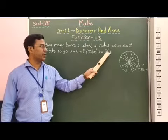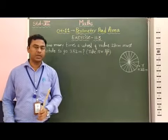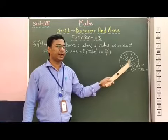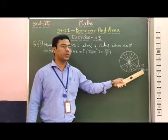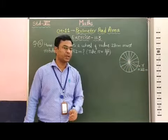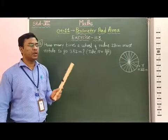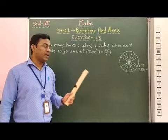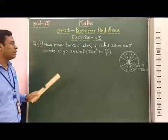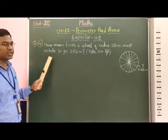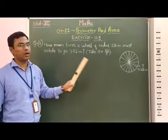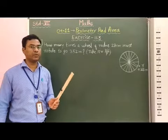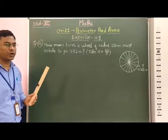Take pi equal to 22/7. In this question, it is given that there is a wheel and the radius of this wheel is equal to 28 cm. This wheel will have to go 352 meters. We have to find out in how many rotations this wheel covers a distance of 352 meters. Therefore, here we have to find out the number of rotations.